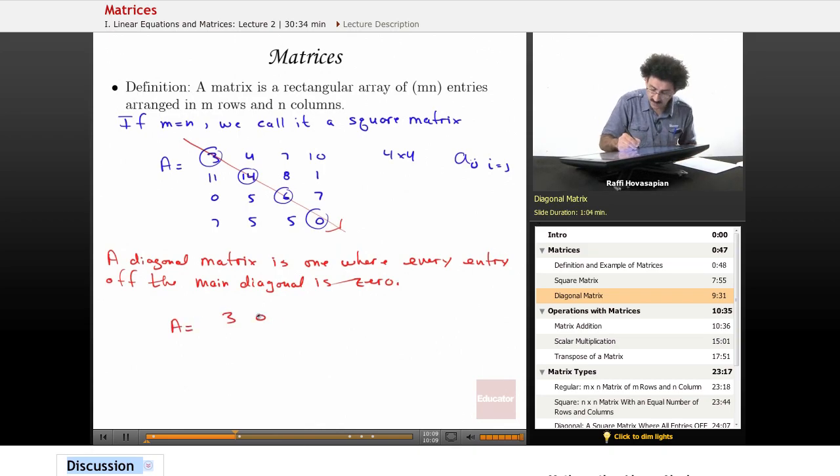So something like if I have [3, 0, 0; 0, 4, 0; 0, 0, 7], so notice I have entries along the main diagonal 3, 4, and 7, but every other entry is zero. So this is called a diagonal matrix. A diagonal matrix is a square matrix where only the main diagonal is represented.